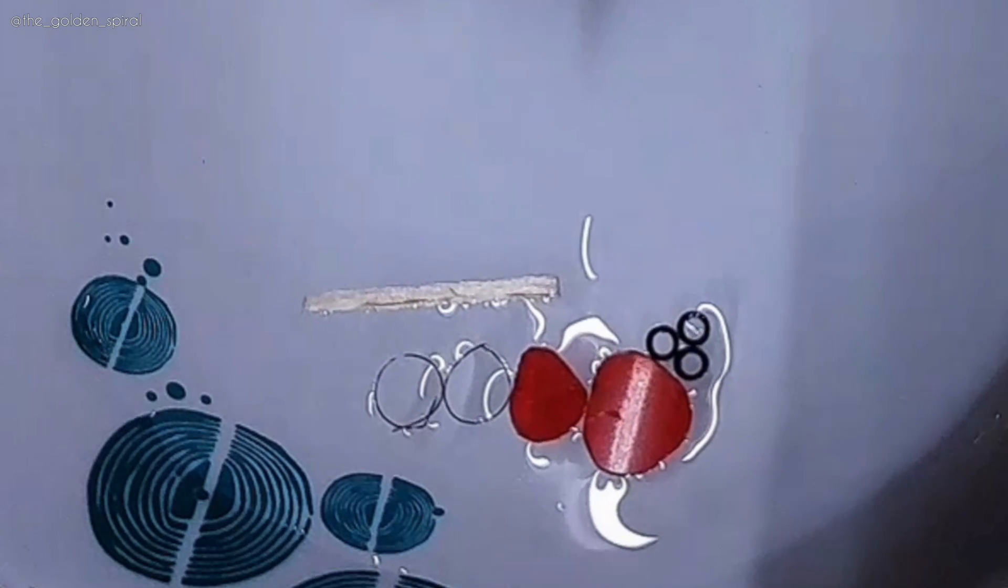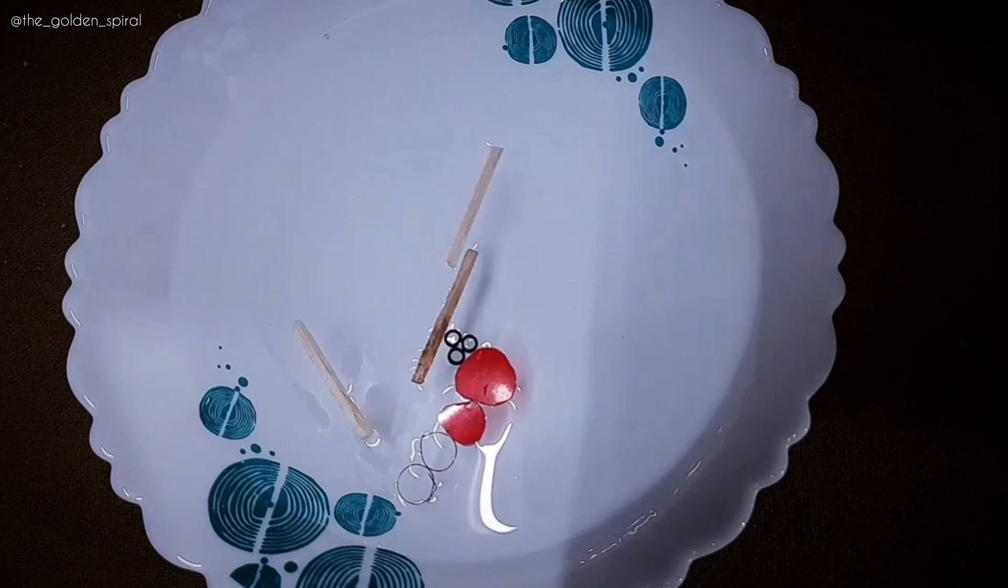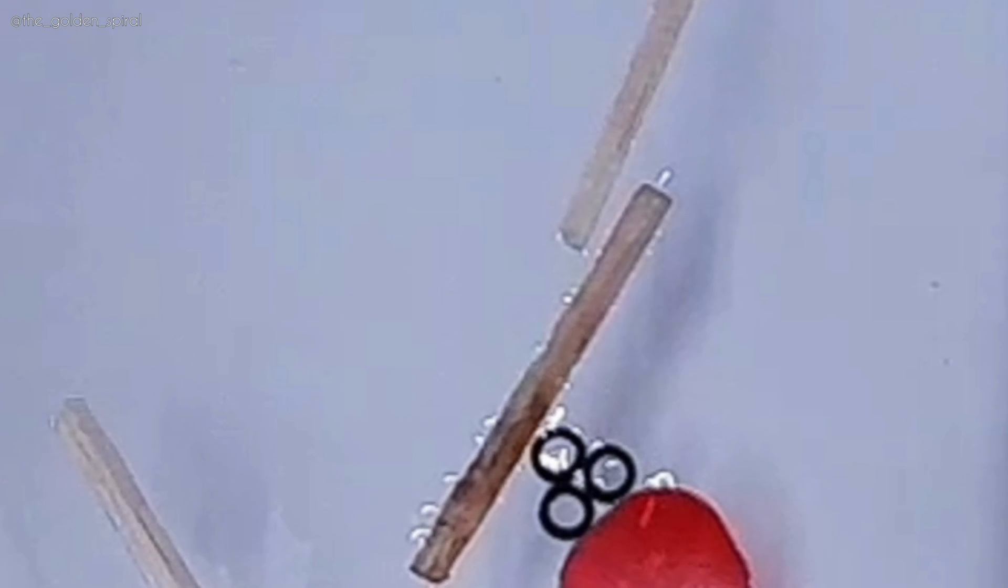But here is the most interesting part of this problem. Why does this wooden piece repel another wooden piece and the member of its group and attract the members of another group?